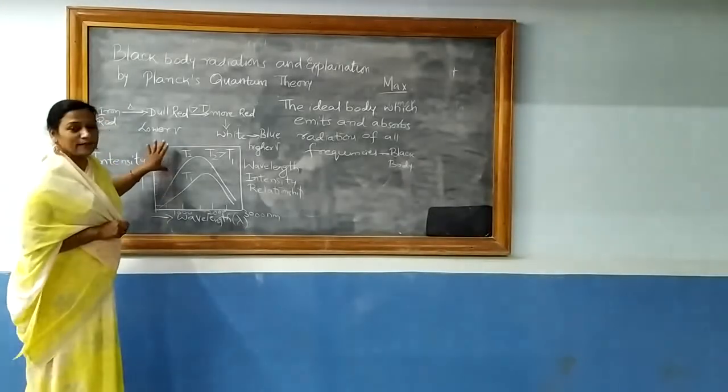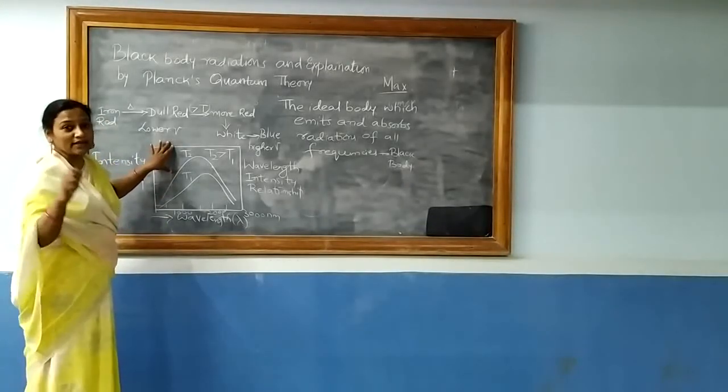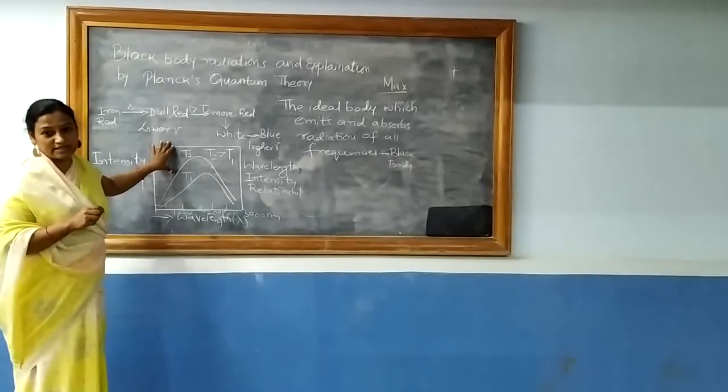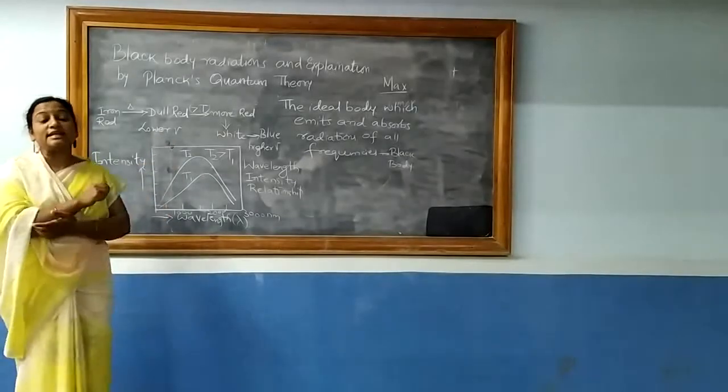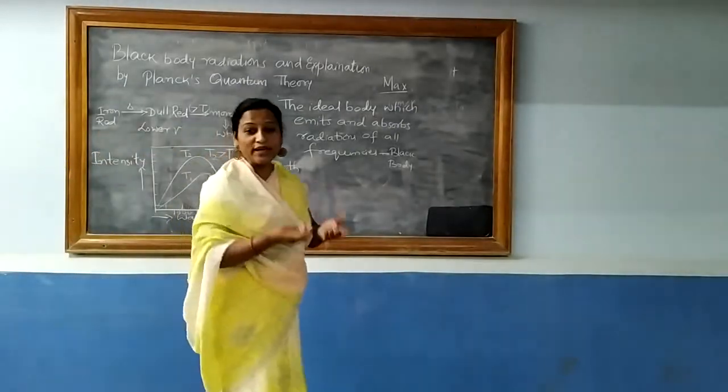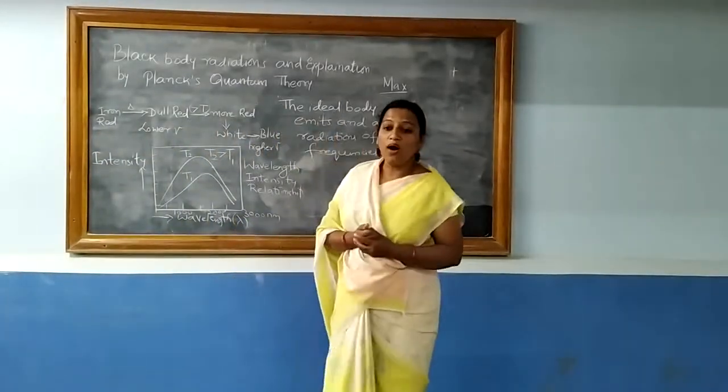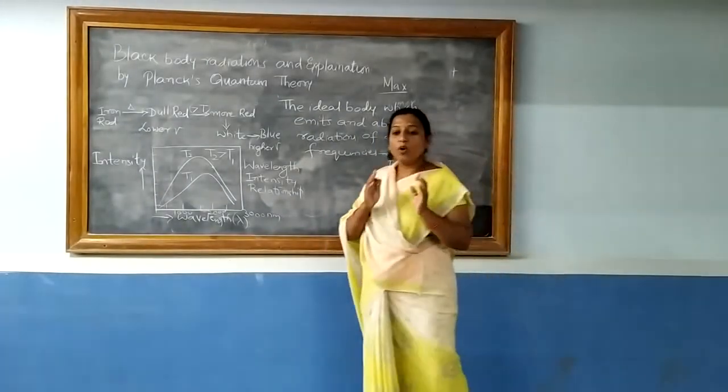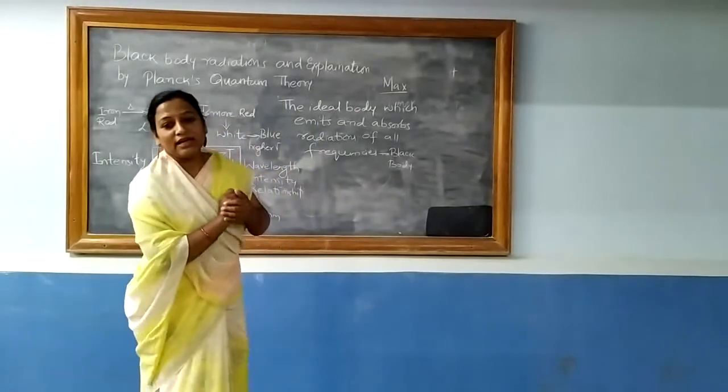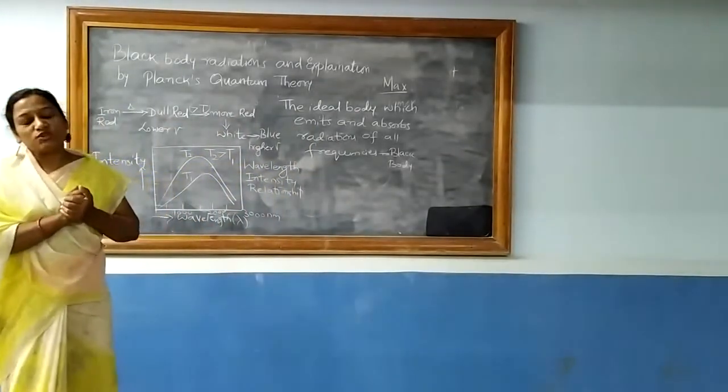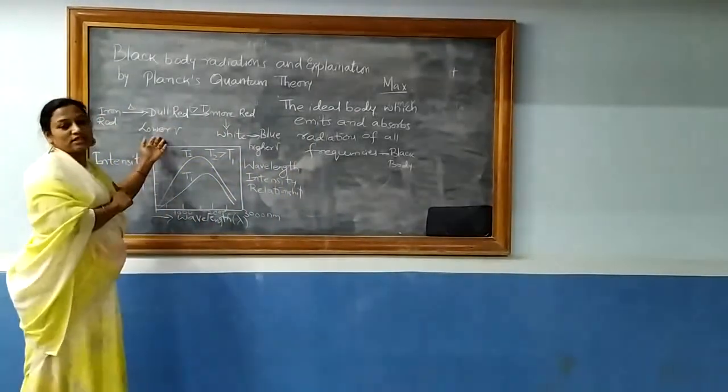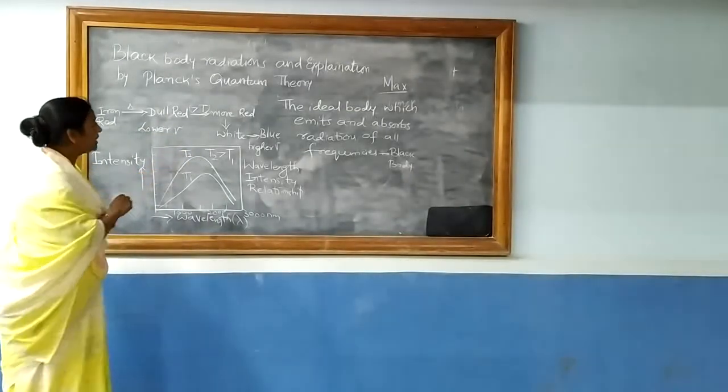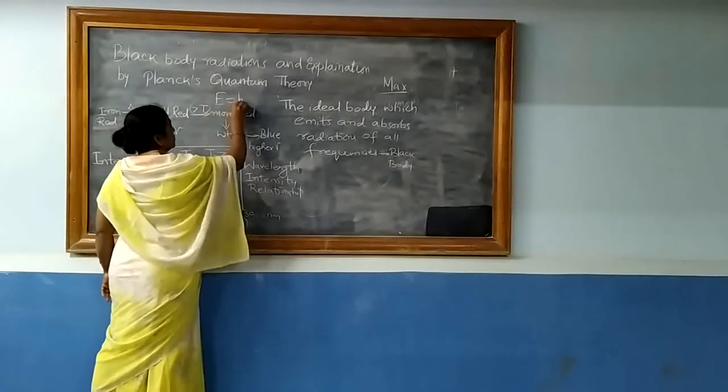Therefore, this can be explained only by considering that electromagnetic radiations are particles. Planck suggested that atoms and molecules could emit energy or radiation only in discrete quantities, small quantities at a time. The quantum of radiation is proportional to frequency or wavelength according to the equation E equals hV.